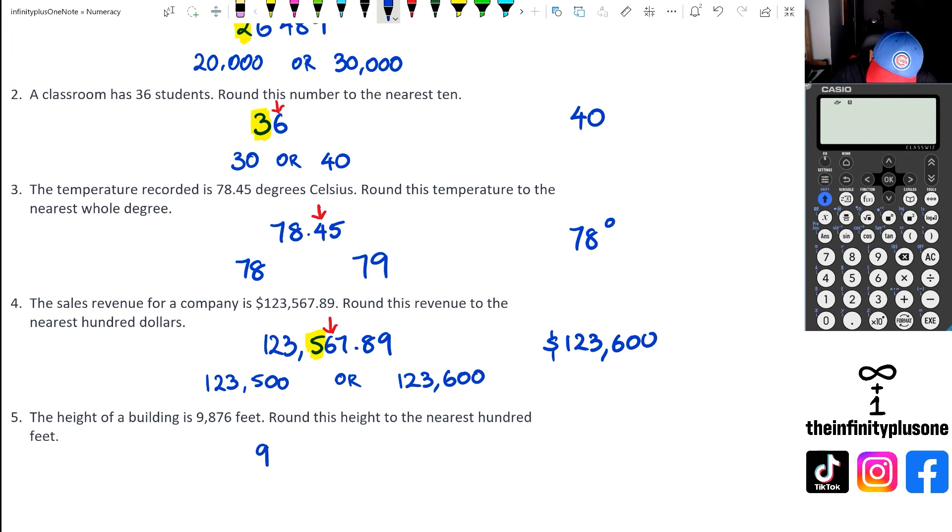Finally, looking at question five, we've got 9,876 and we are rounding up to the nearest 100 feet. So if you're rounding up to the nearest hundreds, that's the hundred space there, and we've got a number that's above five right next to that eight, which means again I'm going to show you guys what the other two numbers could be. We could have had 9,800 or 9,900, and as you can see 876 is a lot closer to 9,900 compared to 9,800. So our answer for this one is going to be 9,900 feet.